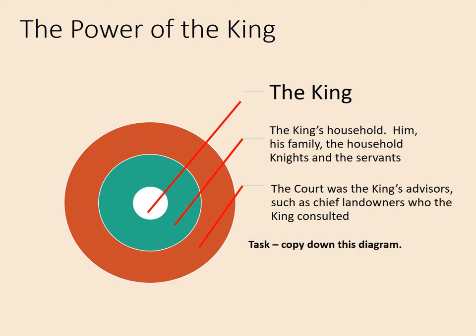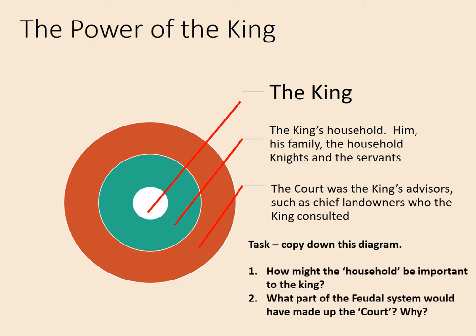Your tasks: first, copy down this diagram — concentric circles with these labels. Then, how might the household be important to the king? And secondly, what part of the feudal system would have made up the court? Consider why. If you've not done the lesson on the feudal system and Norman society, it would be worth having a look at that first. Pause the video while you do these tasks.